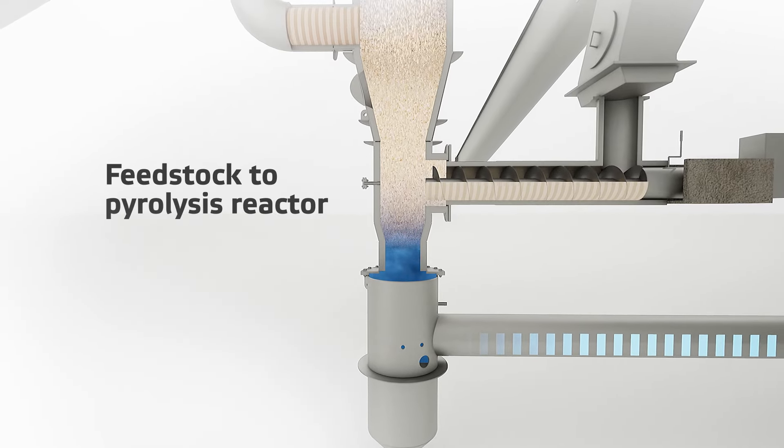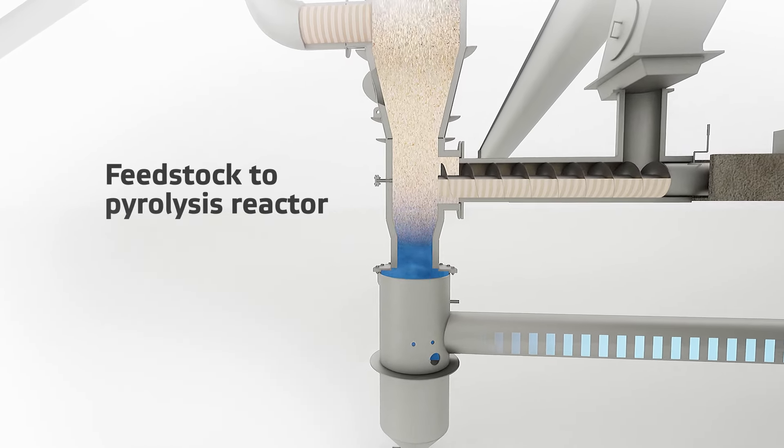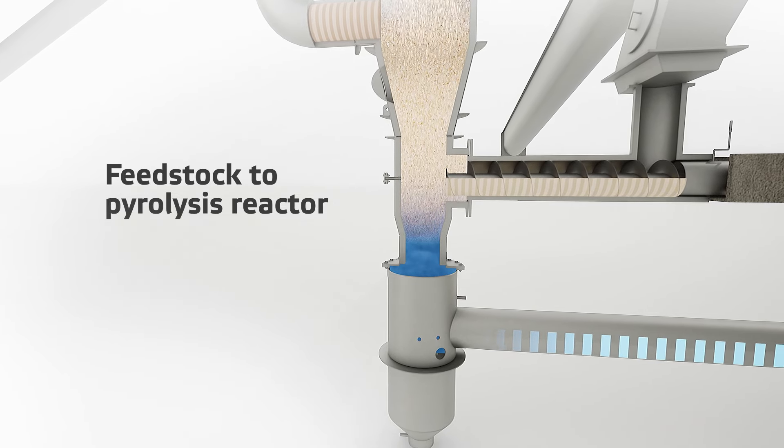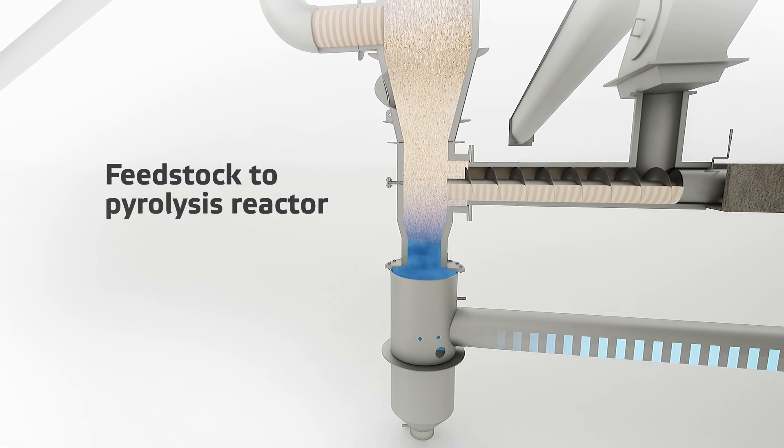The feedstock is fed to the bottom part of the pyrolysis reactor by the screw conveyor. As an endothermic process, pyrolysis needs heat.